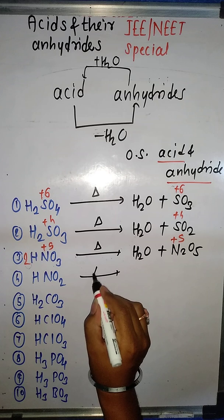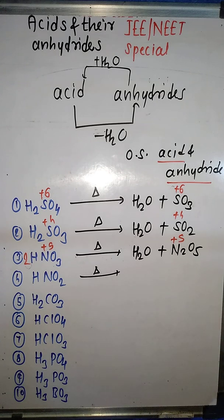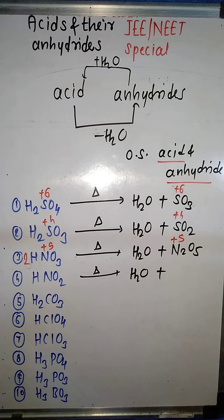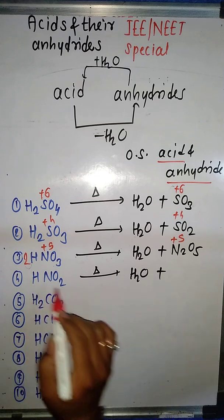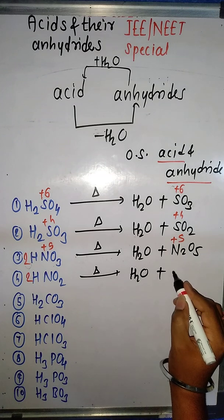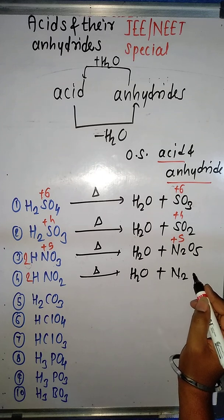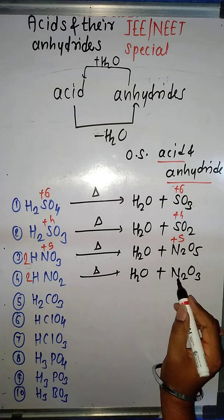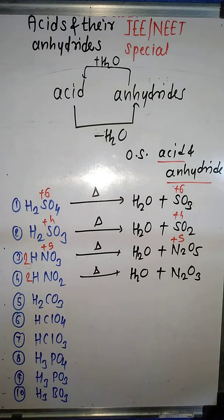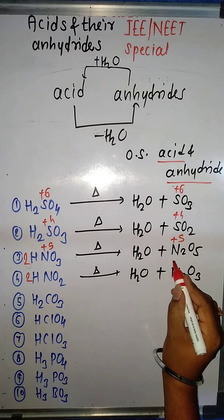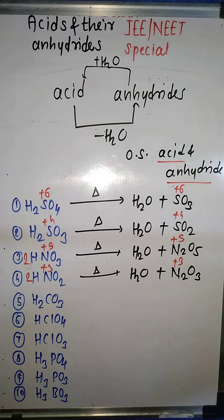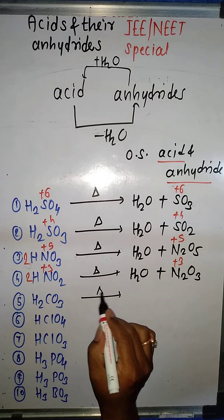Next is HNO₂ (nitrous acid). Heating with a strong dehydrating agent gives H₂O as first product. There are two hydrogens in H₂O but one in HNO₂, so we multiply by two to balance. What's left behind is two nitrogens and three oxygens, giving N₂O₃. The oxidation state of nitrogen in HNO₂ is +3, and in N₂O₃ it is also +3. So dinitrogen trioxide is the anhydride of nitrous acid.